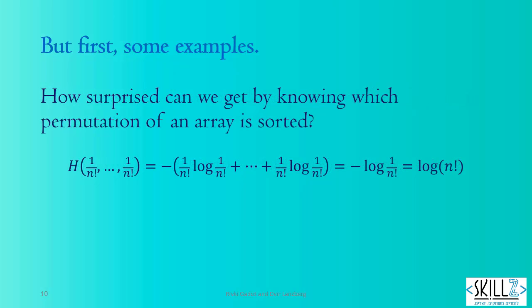How surprised can we get by knowing which permutation of an array is sorted? The entropy of n factorial events with equal probabilities is log of n factorial. Again, pause and make sure that the math comes out all right.